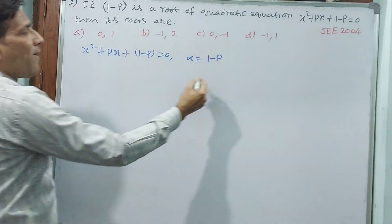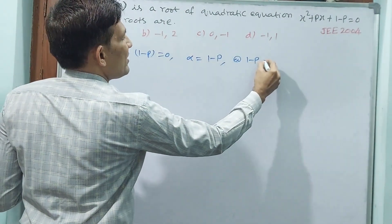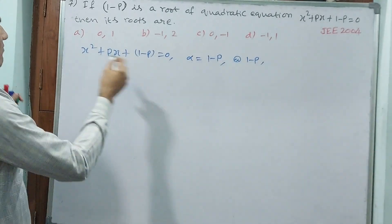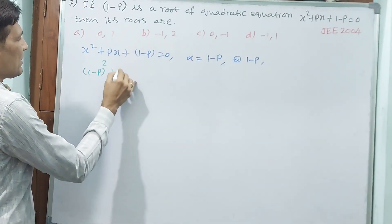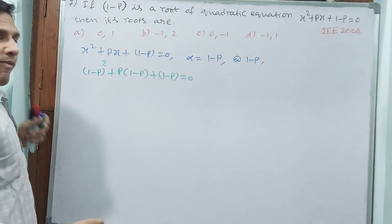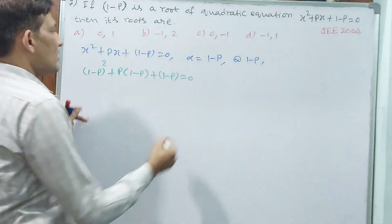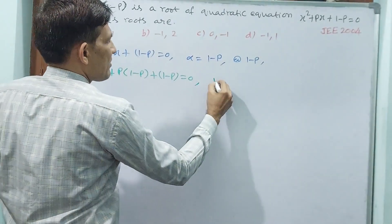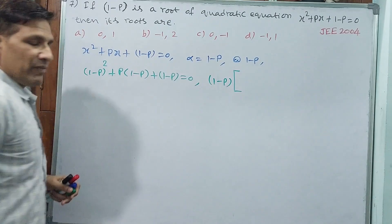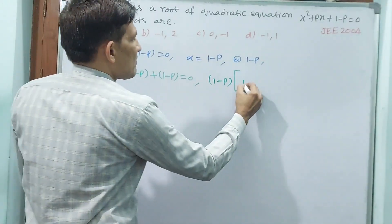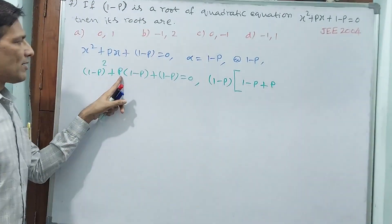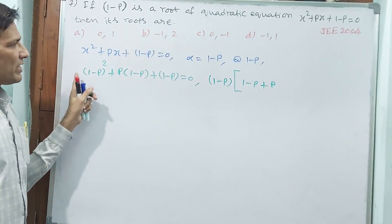Substituting (1-p) into the equation: (1-p)² + p(1-p) + (1-p) = 0. Taking (1-p) as common factor, we get (1-p) times [(1-p) + p + 1] = 0.